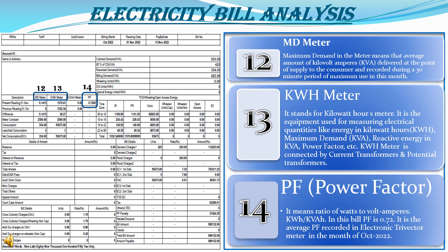The KWH meter also measures power factor and is connected by current transformers and potential transformers. Power factor is a very important term in the electricity bill. Power factor means the ratio of kilowatt to kilovolt-ampere, that is KW by KVA. In this bill, the power factor is 0.72, which is very less. We will discuss the power factor matter at the end of the video. It is the average PF recorded by the electronic trivector meter in the month of October 2022, displayed as 0.72 in the electricity bill.